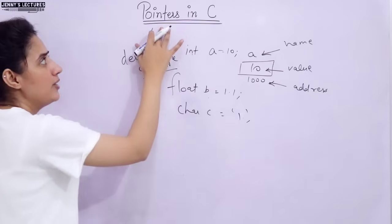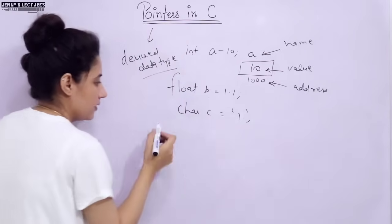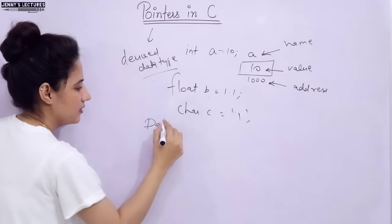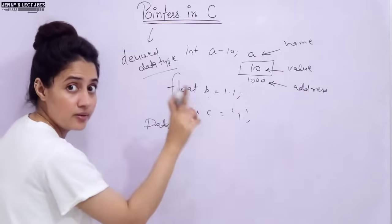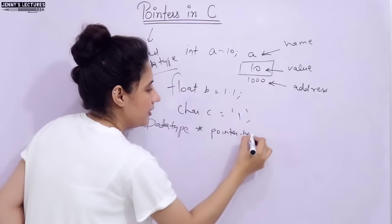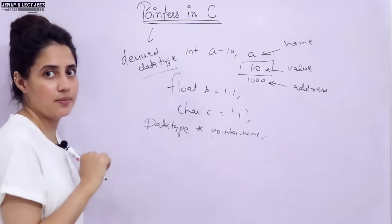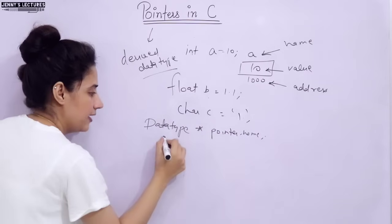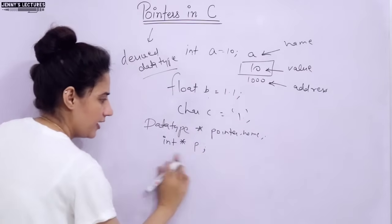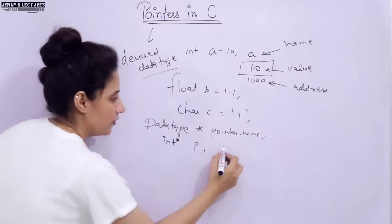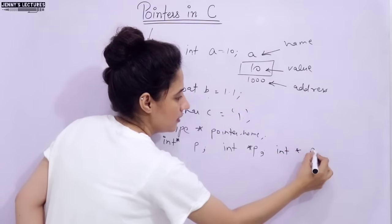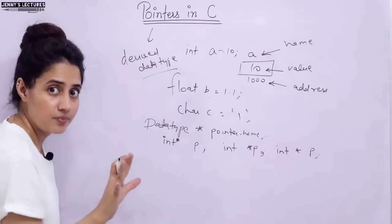Now, how to declare a pointer. The general syntax is: data type, then asterisk, then pointer name. So if I write: int *p — that is the declaration. You can write it as int* p or int *p; both are the same in C. If you write simply int p, it means p is a variable which will contain an integer value. But if you add the asterisk, it means p is a pointer variable which will contain the address of another variable.